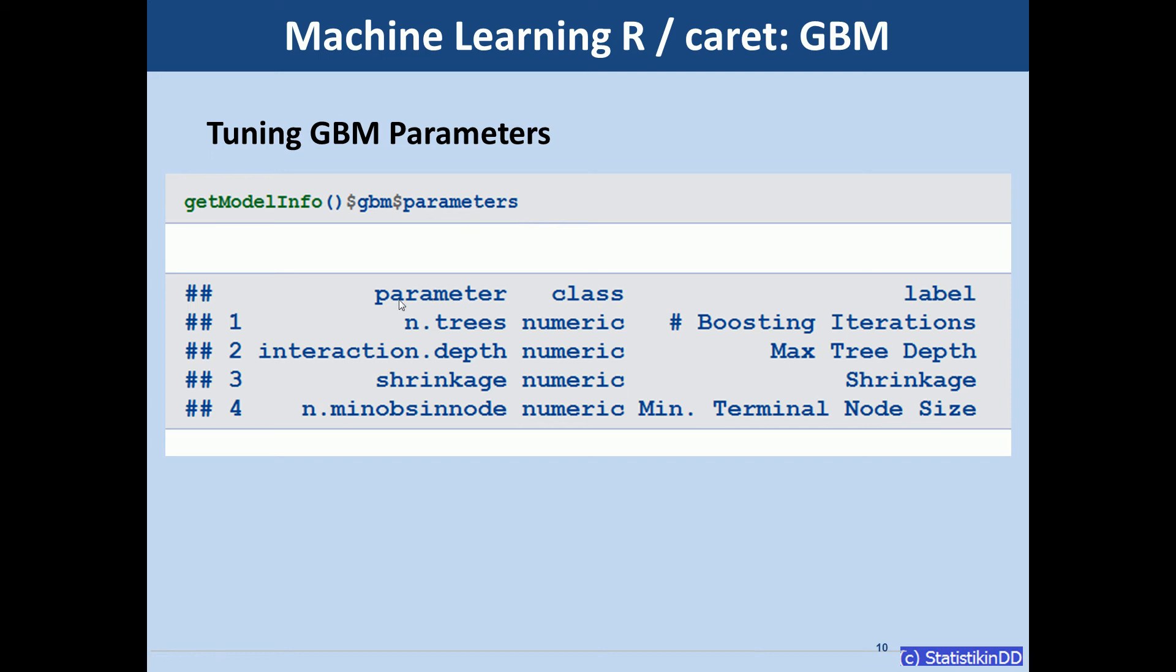The number of boosting iterations or n.trees. The max tree depth or interaction.depth. Then shrinkage relates to how fast the learning curve is. So it relates to the weighting process. And then the minimum terminal node size.